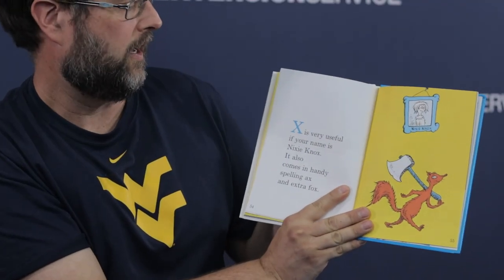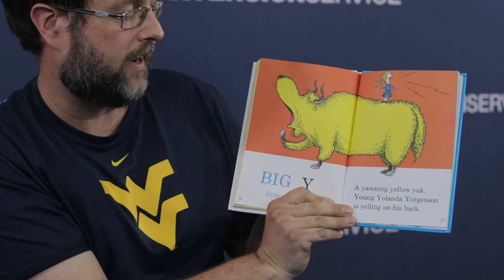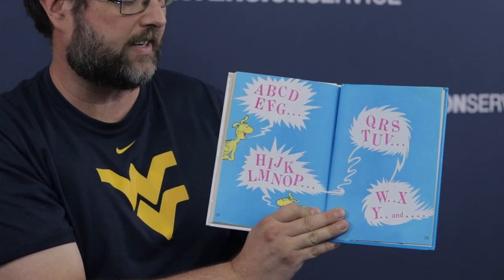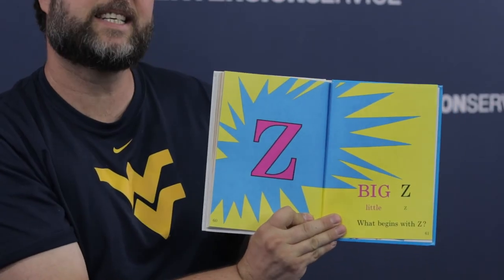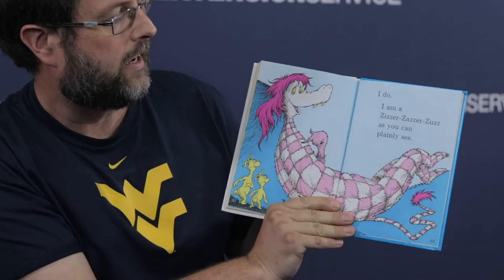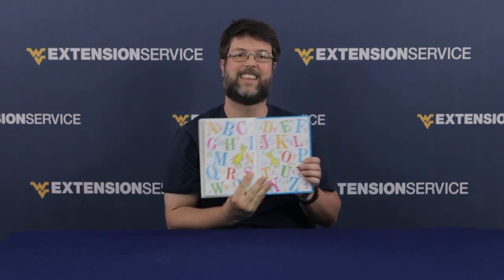X is very useful if your name is Nixie Knox — it also comes in handy spelling axe and extra fox. Big Y, big Y, little Y — a yawning yellow yak, young Yolanda Yorgensen is yelling on his back. A, B, C, D, E, F, G, H, I, J, K, L, M, N, O, P, Q, R, S, T, U, V, W, X, Y and Z. Big Z, big Z, little Z — what begins with Z? I do! I am a Zizzer-Zazzer-Zuzz, as you can plainly see. The end.